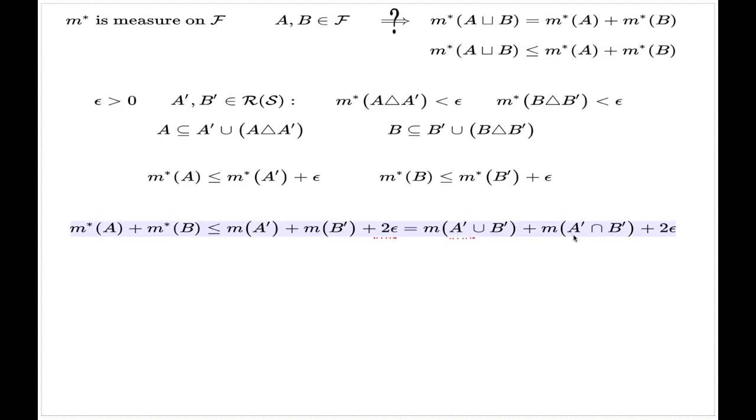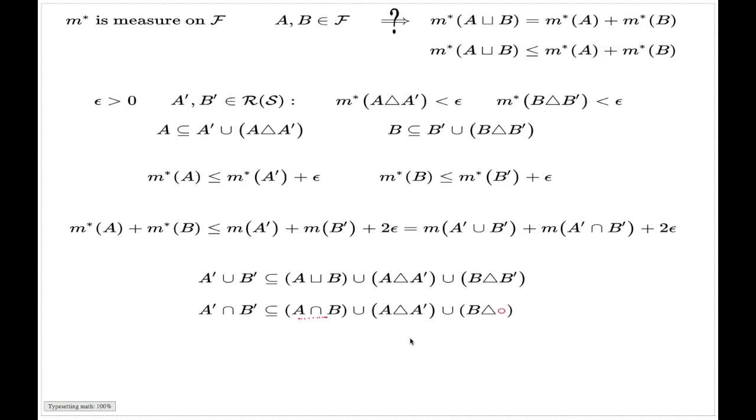Now I have to estimate this and this separately. For this estimate, I will use the following set identity. The union of A' and B' is the subset of the disjoint union of A and B union with the symmetric differences. Again, I'm not going to comment on this set relation, I hope you can establish it independently. And for the intersection, I do something similar. The intersection of A' and B' is the subset of the intersection of A and B union with the corresponding set differences.